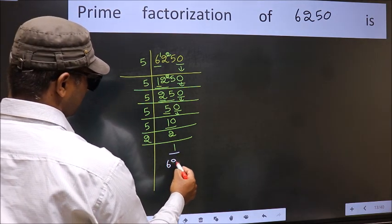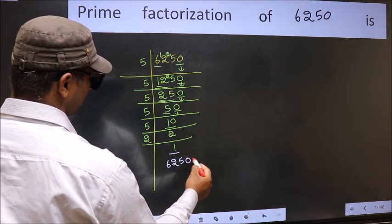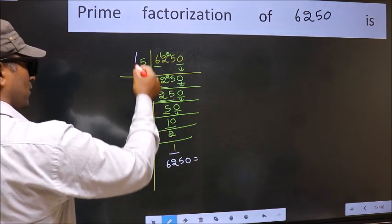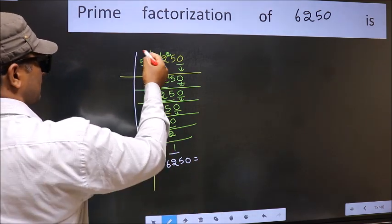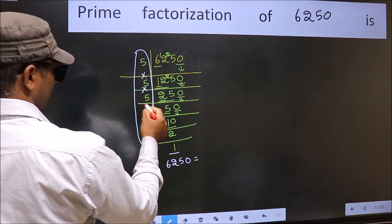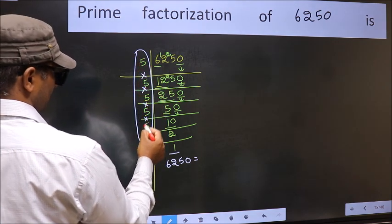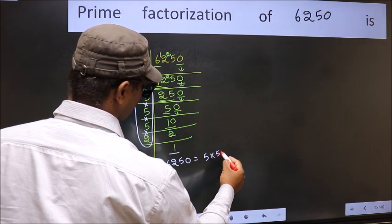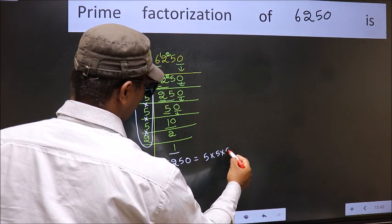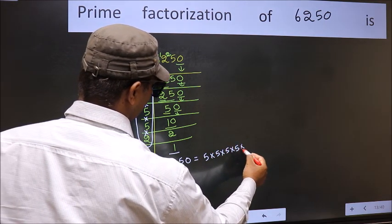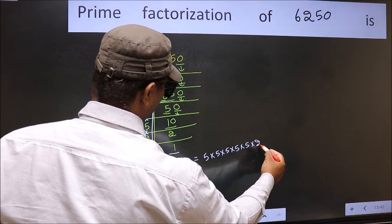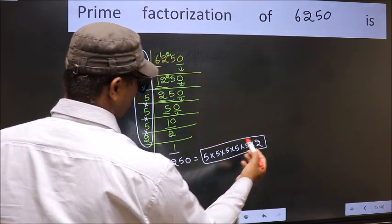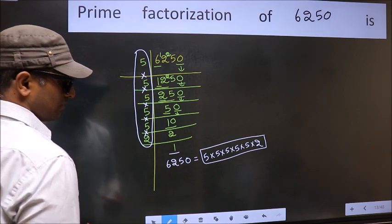So the prime factorization of 6250 is the product of these numbers: 5 × 5 × 5 × 5 × 5 × 2. This is the prime factorization of 6250. We have 5 to the power of 5 multiplied by 2.